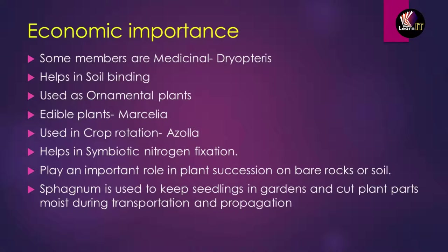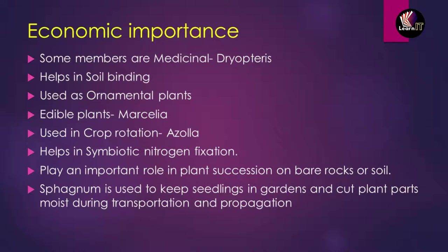Some types like Azolla are used in crop rotation. They also show symbiotic nitrogen fixation, fixing nitrogen from the atmosphere for plants. They play an important role in plant succession on bare rocks. A plant known as Sphagnum is used to keep seedlings in gardens and cut plant parts moist.